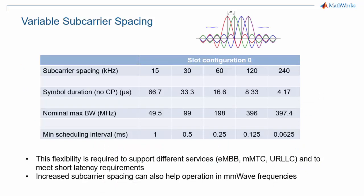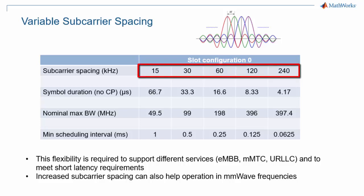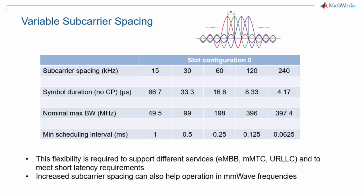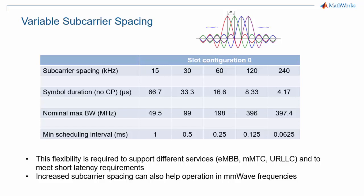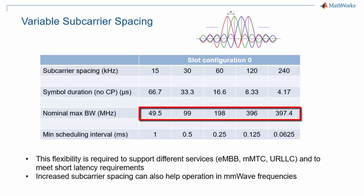Key to many 5G features is the fact that the subcarrier spacing in 5G NR can take not just one value — 15 kHz in LTE — but powers of two multiples of 15 kHz up to 240 kHz, as shown on the first line. As a consequence, as the OFDM symbol duration is the reciprocal of the subcarrier spacing, the symbol duration shrinks by a factor of 2, 4, 8, or 16 for the highest subcarrier spacing. At the same time, the same number of subcarriers, when spaced further apart, occupies a larger bandwidth, as can be seen on the third line.